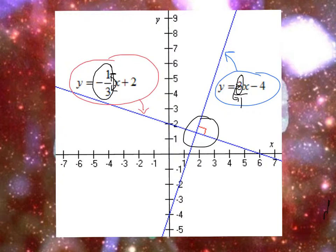So remember, slopes of perpendicular lines is opposite sign and it's also the reciprocal.